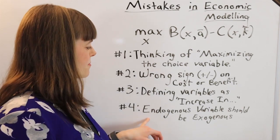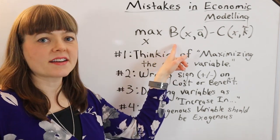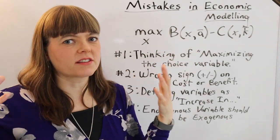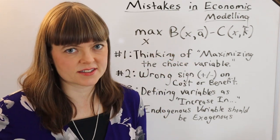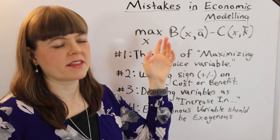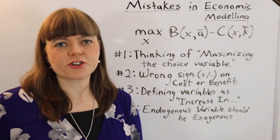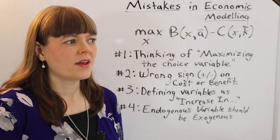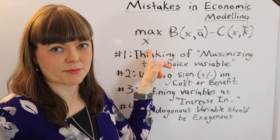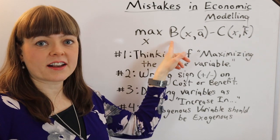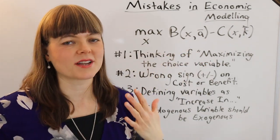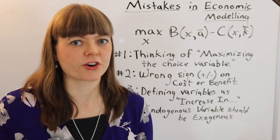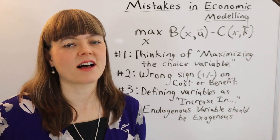The next common mistake I see in student models is that they'll have a variable that's endogenous. In other words, it's a function of the choice variable. When, if you think about it logically, that variable should be exogenous. And an example of that might be if you have something like extraversion, that's a feature of a person's personality. It's probably not going to depend on your choice variables. So if a student had a number of parties you attend per month, and they had extraversion as a function of the number of parties that you attend, that doesn't make sense because attending more parties does not make you more extroverted. Extraversion is sort of a fixed personality characteristic.